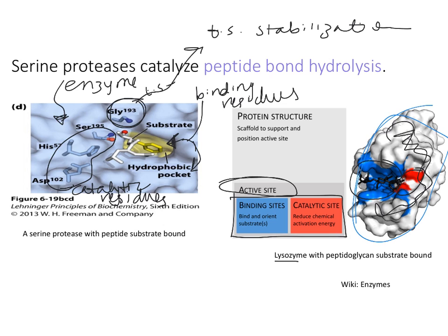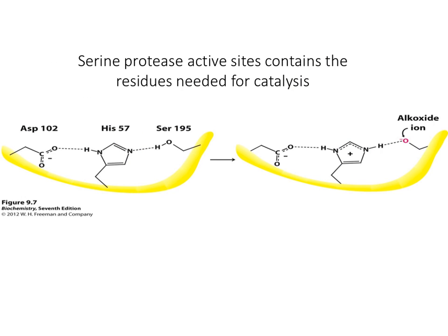The catalytic residues are in a physically separate region from the binding residues — they are different and in different locations. This is another representation of the three catalytic residues: an aspartate, a histidine, and a serine. All serine proteases have this catalytic triad, and they're called serine proteases because the serine is the nucleophile.